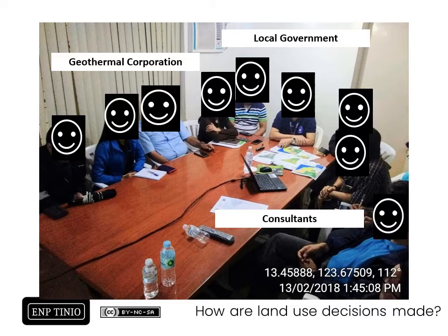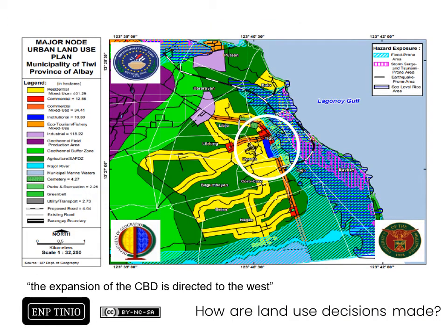Included in this consultation session are members of the local government unit including the mayor, and the geothermal corporation in Tiwi, which is a large stakeholder because they occupy almost 50% of the land area of the municipality. As consultants from the University of the Philippines Diliman, the main result of the comprehensive land use plan is that the expansion of the current commercial central business district in Barangay Tigby — circled in this map — is to be directed to the west because of projected effects of sea level rise.